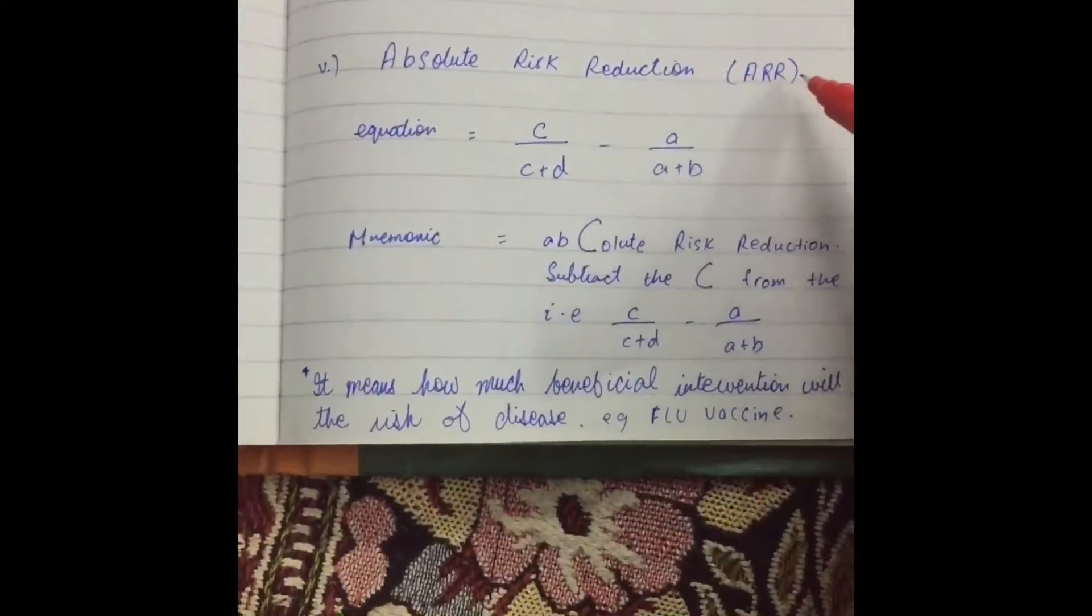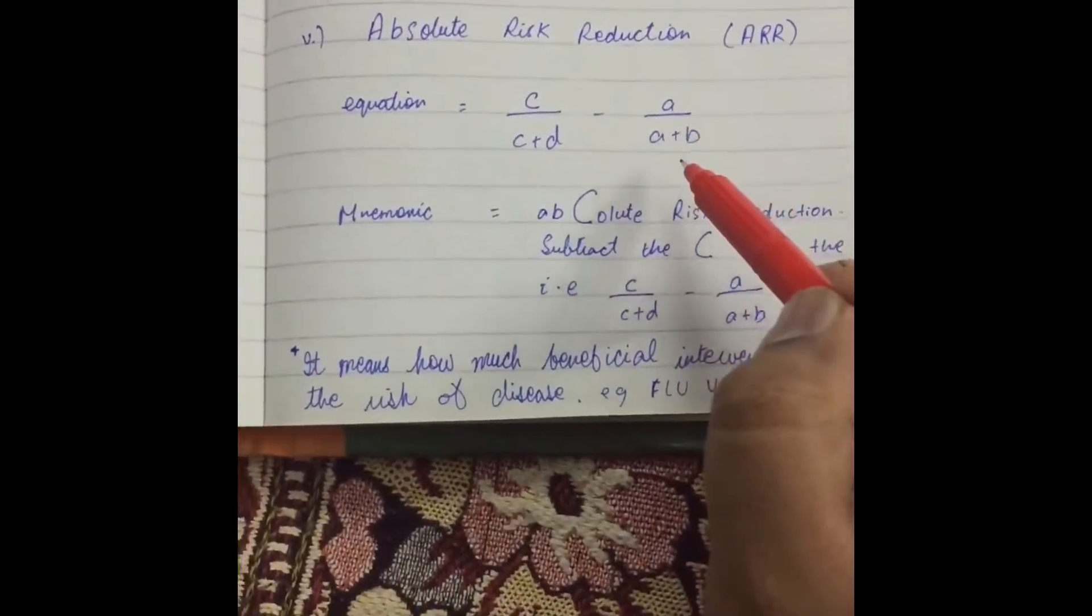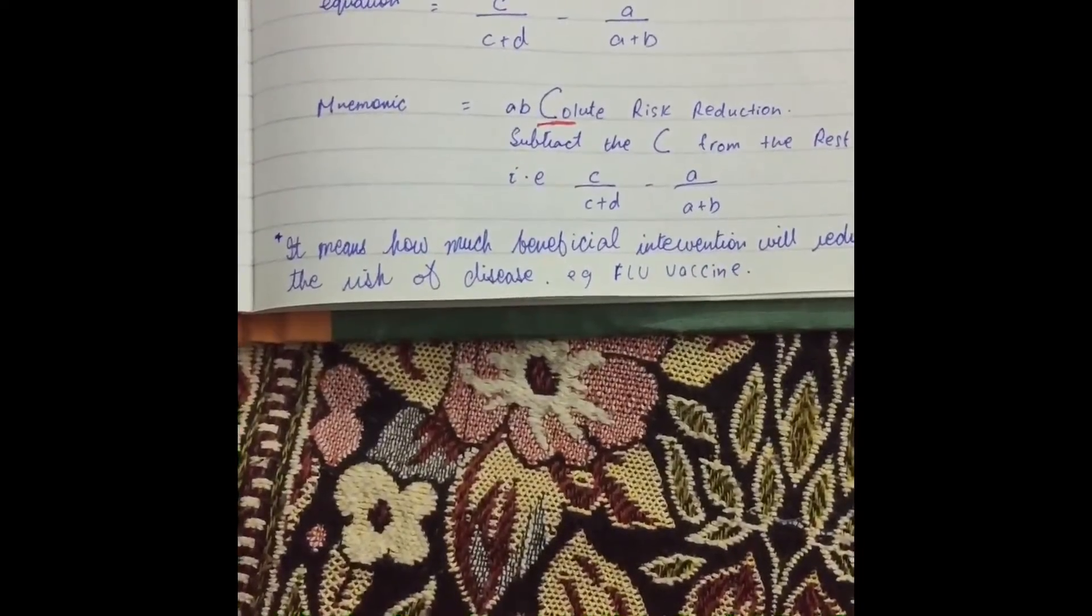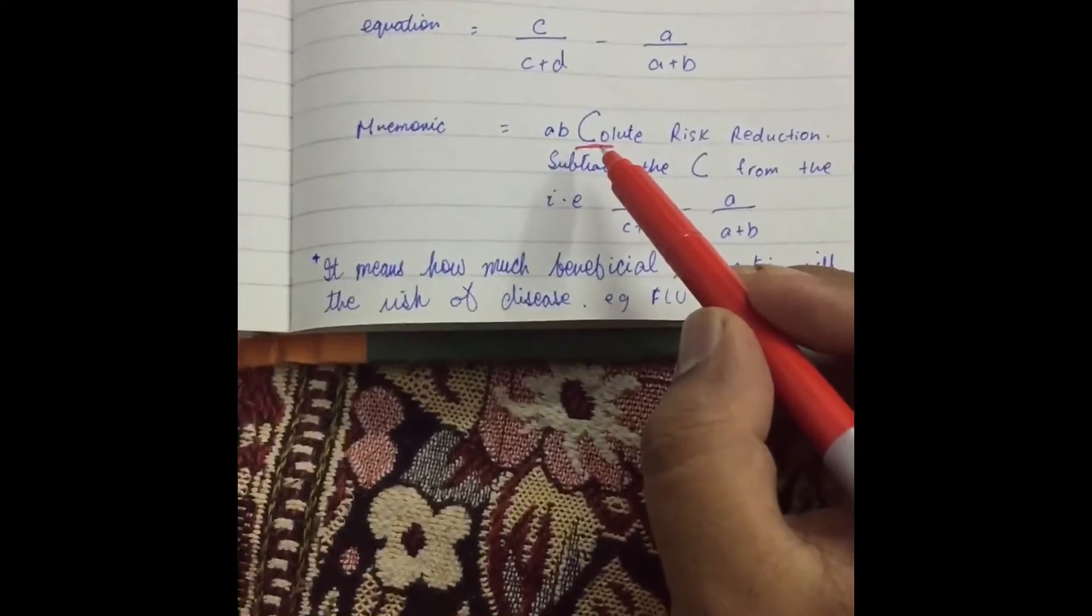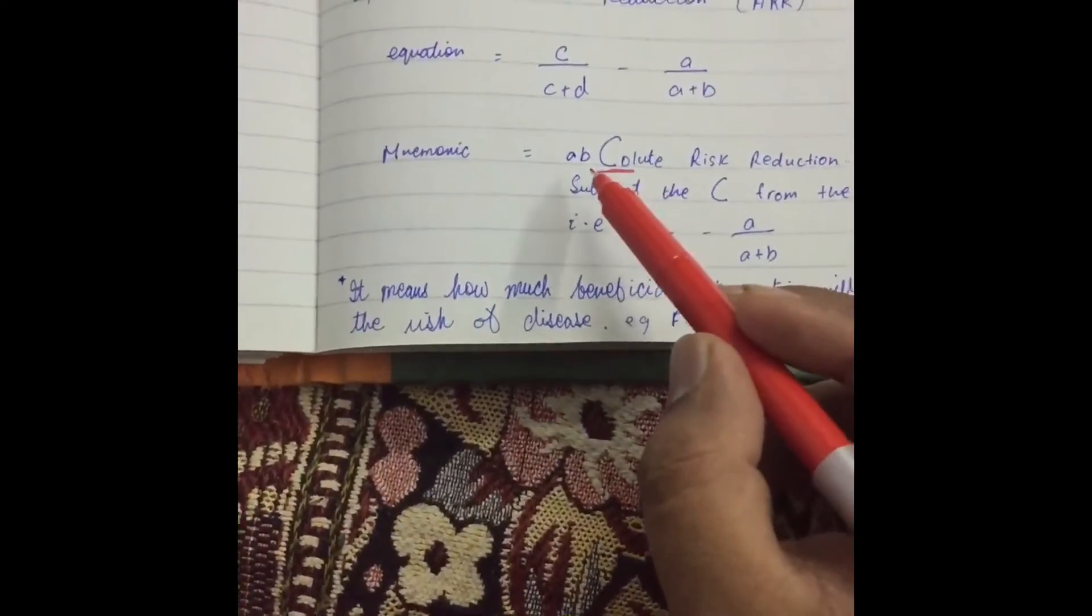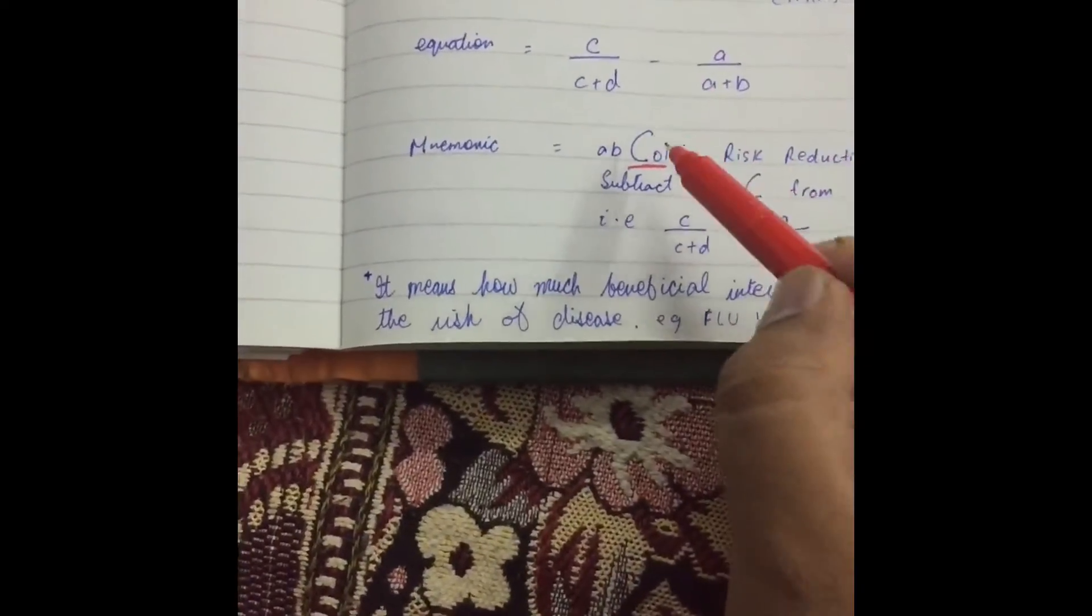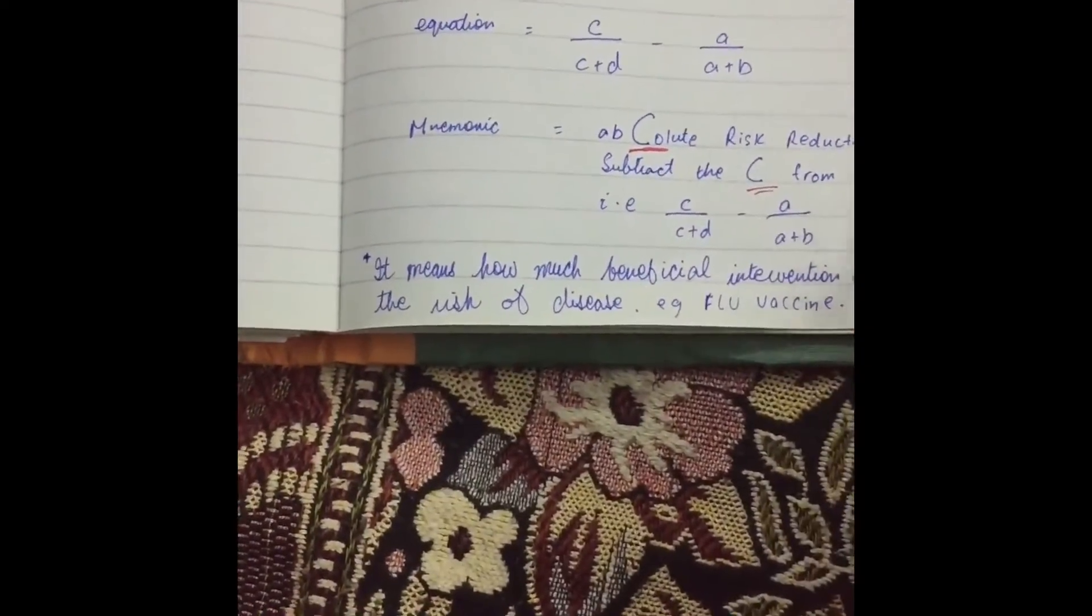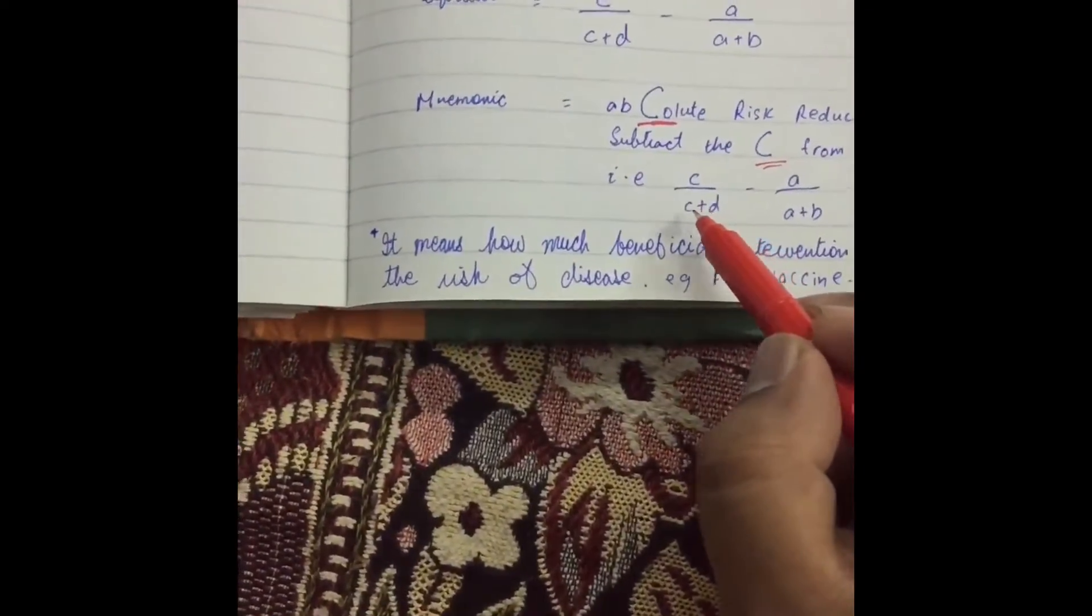Next is Absolute Risk Reduction. Equation is C, or C plus D, minus A, over A plus B. In biostats, nothing makes sense. So, why should the spellings, right? So, we can write Absolute with a C. Of course we can write. So, it will become Absolute Risk Reduction with a C. And now, we just have to subtract the C from the rest. C from the rest. Absolute. C plus, C, or C plus D, minus A, over A plus B.